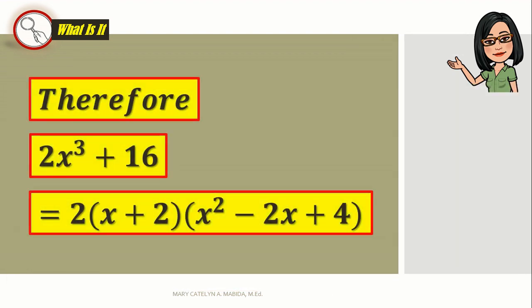Therefore, 2x cubed plus 16 is equal to 2 times the quantity of x plus 2 times the quantity of x squared minus 2x plus 4.